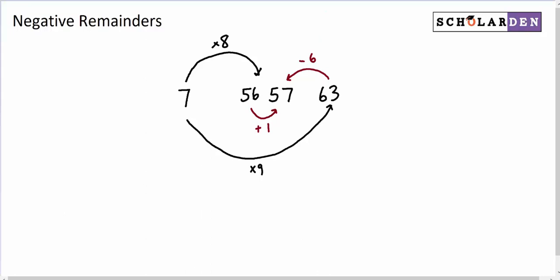So think of negative remainders as sort of overshooting the number and then going back. And the thing to notice that's going to be important in this lesson is that the negative remainder and the positive remainder, if we got rid of the negative sign, add up to the divisor.